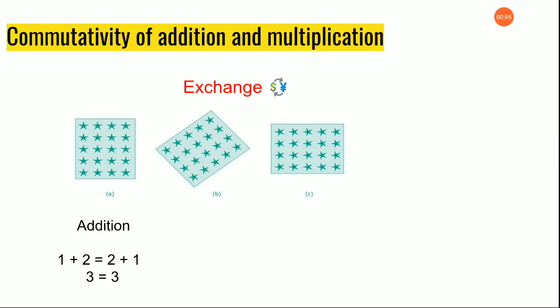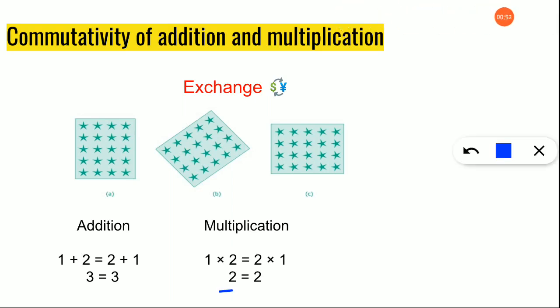Now let's see how commutativity works for multiplication. One times two is equal to two. The places are exchanged — two times one is also two. So can we say multiplication is commutative? Yes. Addition and multiplication are commutative.